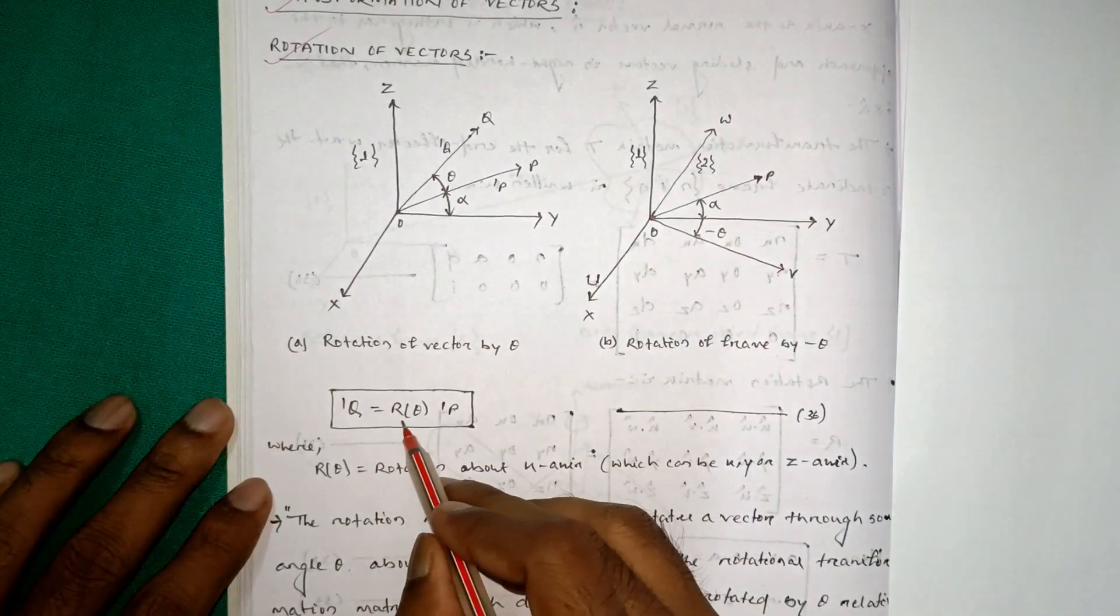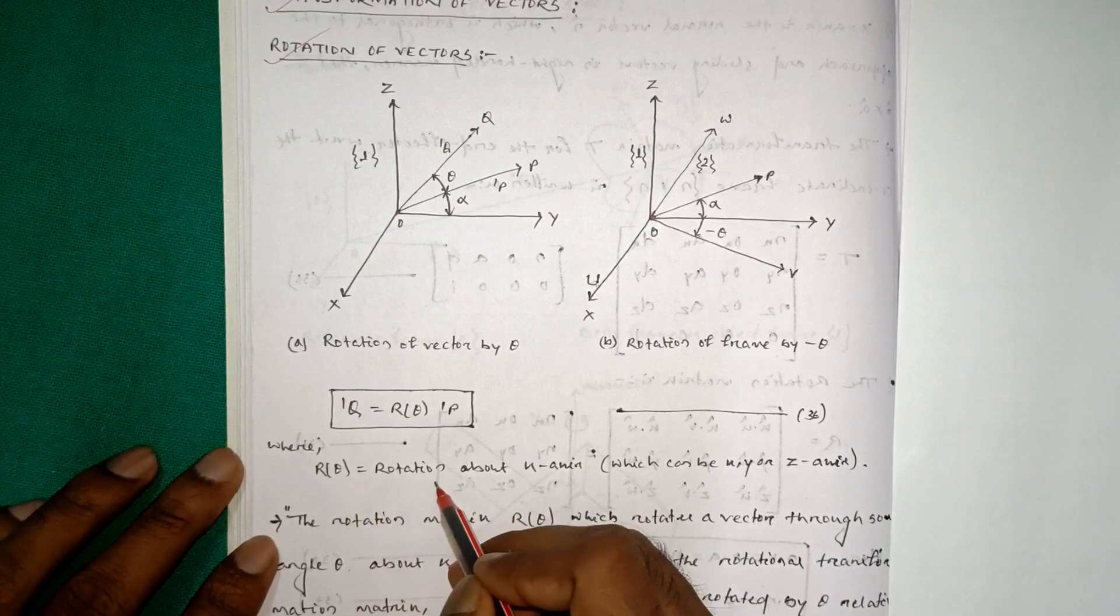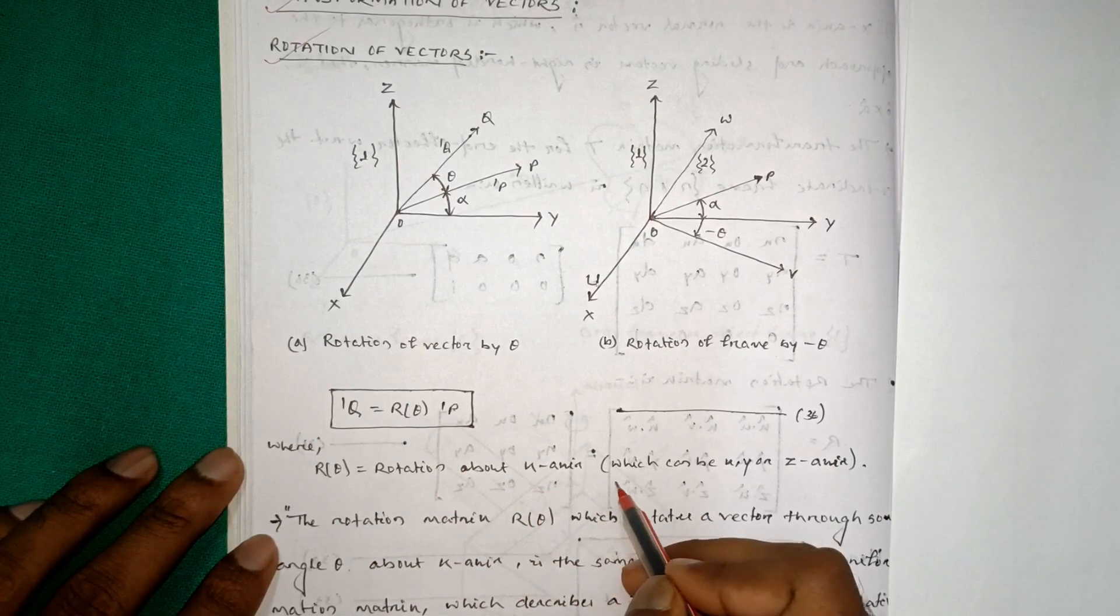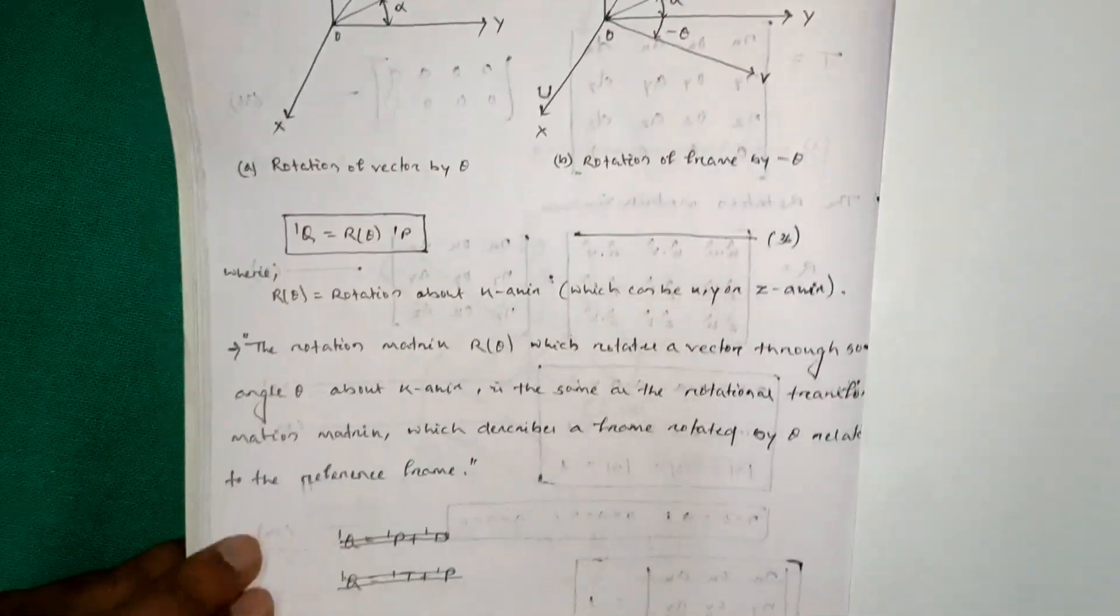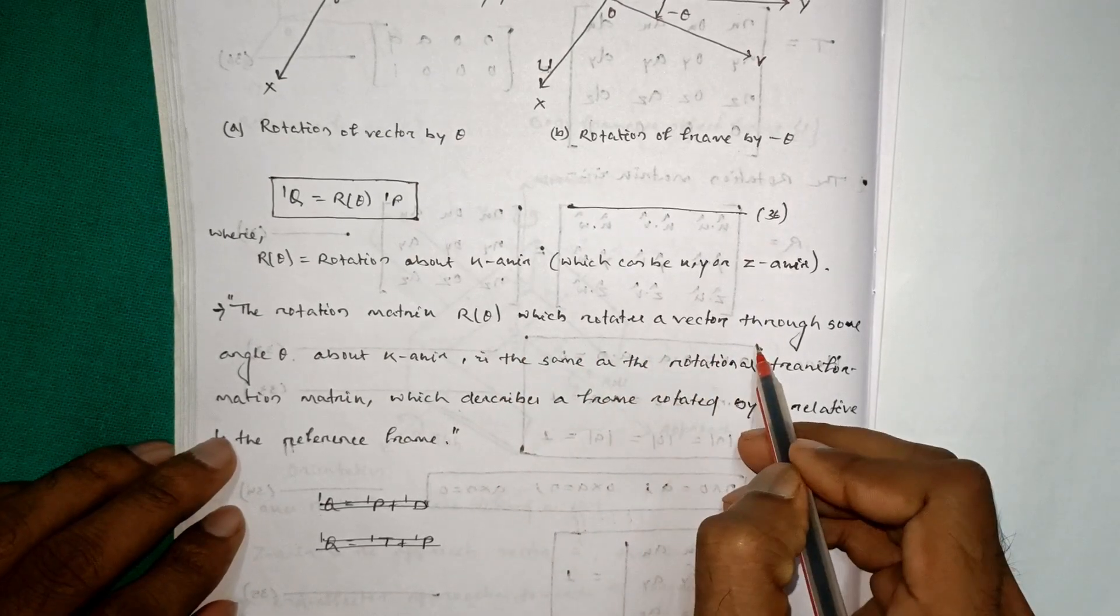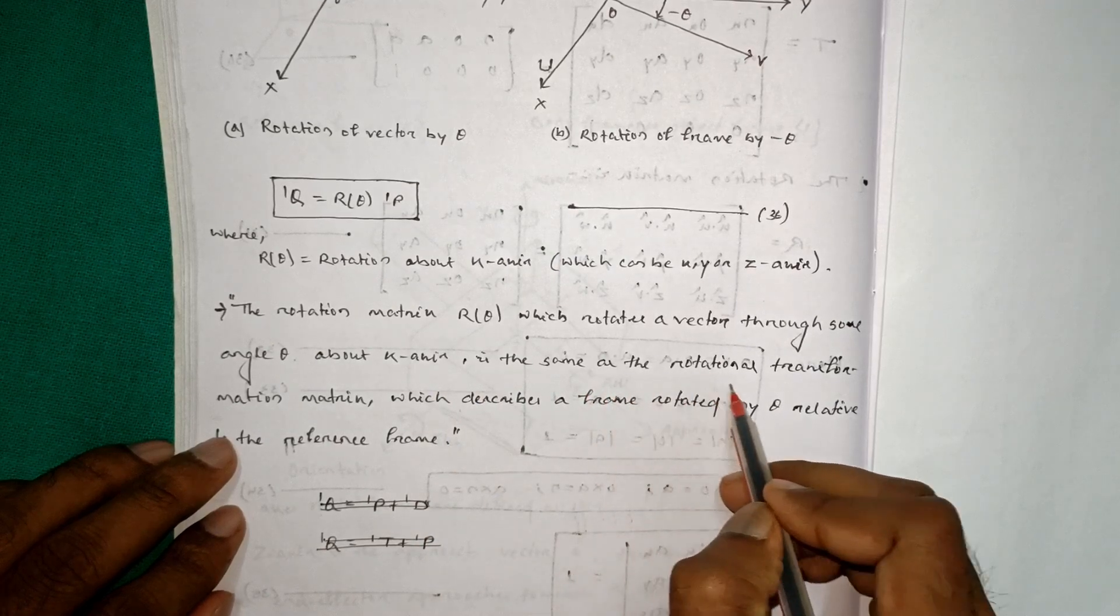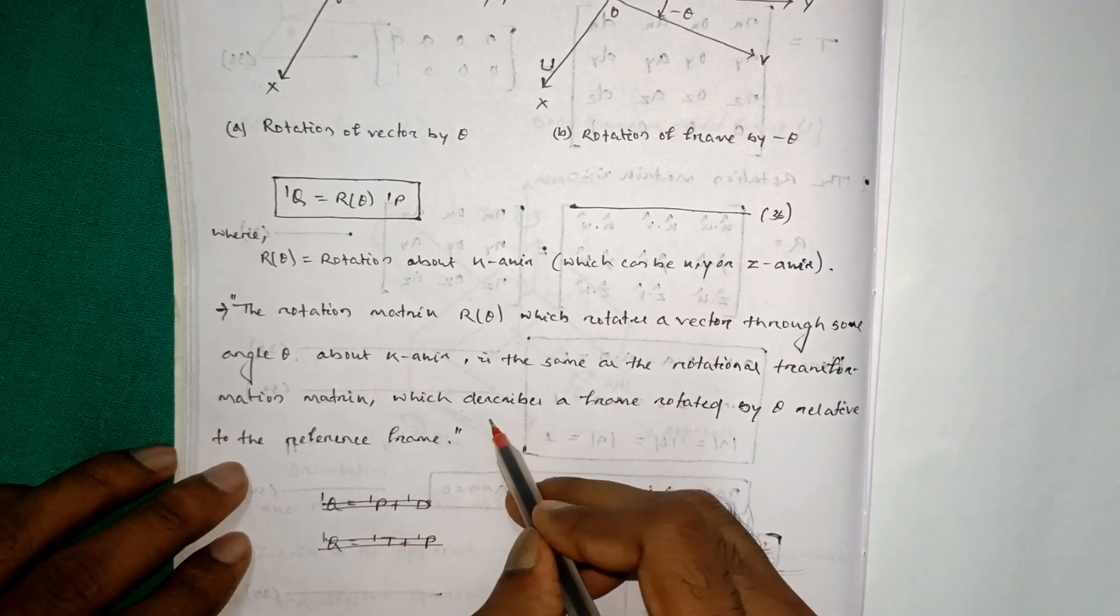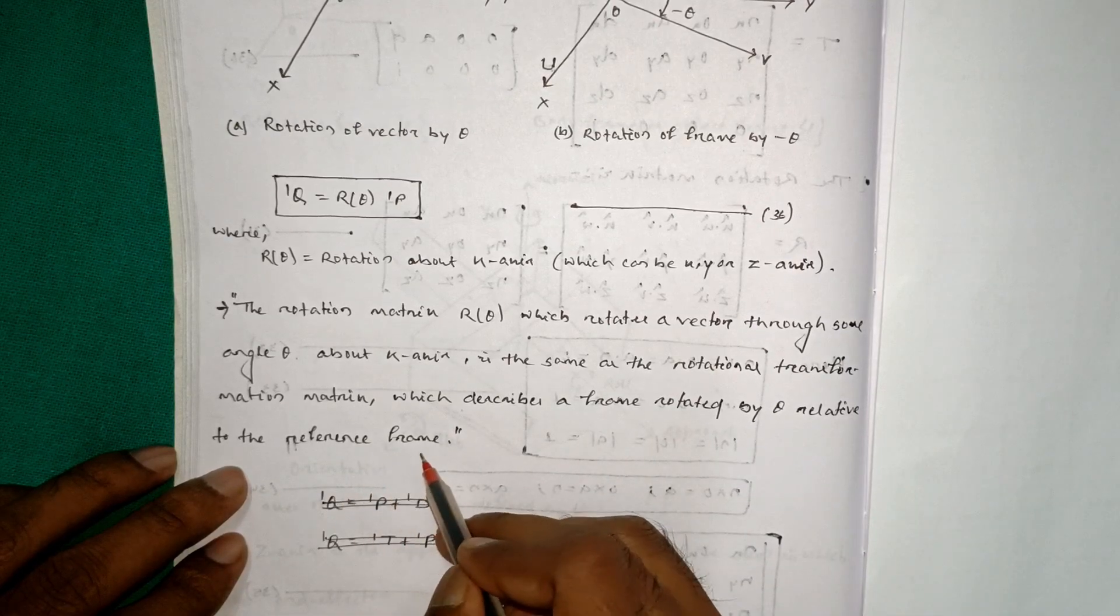1Q is equal to R of theta 1P, where R of theta is equal to rotation about X axis, which can be X, Y or Z axis. The rotation matrix R of theta which rotates a vector through some angle theta about K axis is the same as the rotational transformation matrix which describes a frame rotated by theta relative to the reference frame.